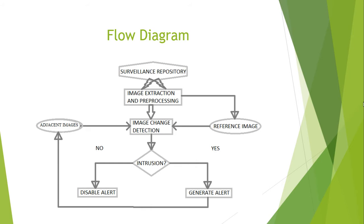I have a reference image and I have recent images. A reference image is basically a stable background image; I use it to see if the current image has any modifications compared to that image. I also compare with recent images to see how frequently a change is occurring. Based on calculations and algorithms, I determine whether an intrusion has occurred. If it has, I generate an alert and notify the appropriate authorities. If not, I disable the alert.